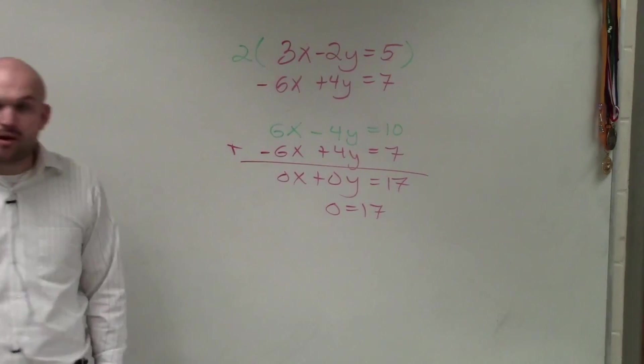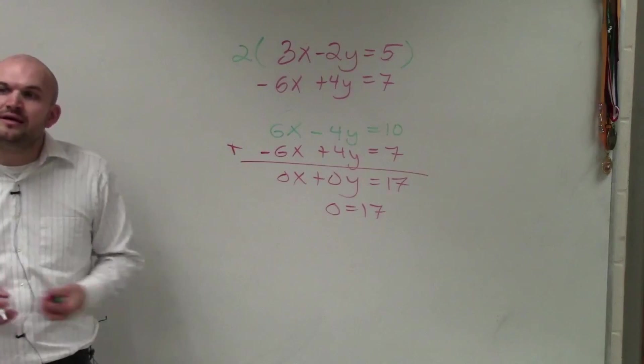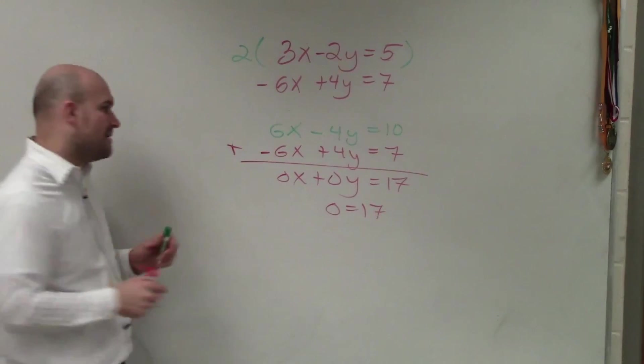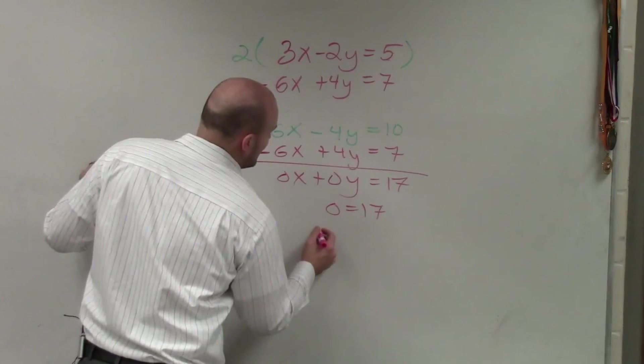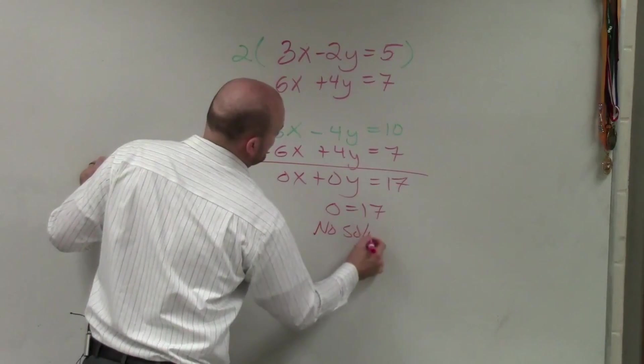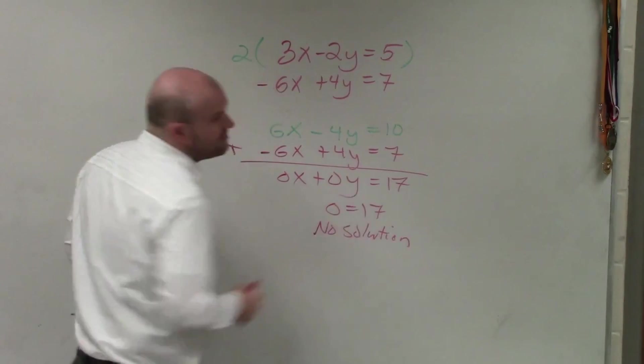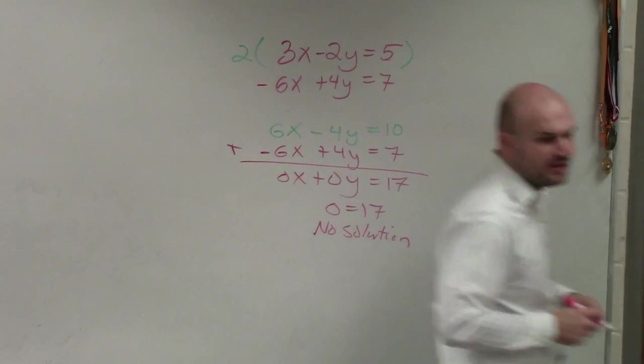It doesn't tell me what x is equal to or what y is equal to. It gives me a false statement. Since they give me a false statement, Kujan, this is a no solution. There is never going to be an intersection that is going to be true for either of these equations. So therefore, it's no solutions.